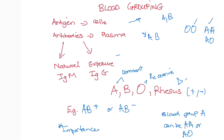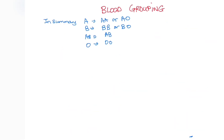You can have genotype AO but your blood type is still A. In order to have blood type O, your genotype needs to be OO. Keep that in mind for exams — O is always a possibility because of the recessive system. To summarize the genotypes: blood group A can be AA or AO; blood group B can be BB or BO; blood group AB is just AB; blood group O has two O alleles.